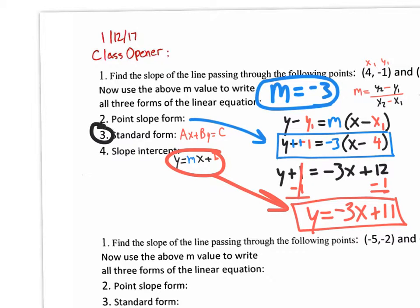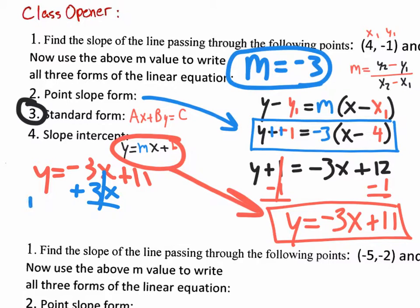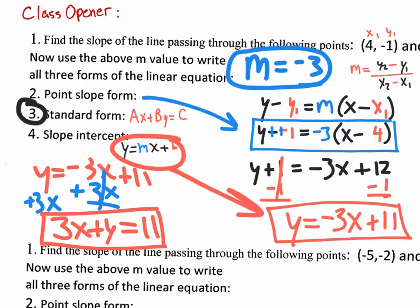We still need standard form, so either go back to point slope or use the slope intercept equation. Standard form has x's and y's on the left side of the equal sign. I need to move the negative three x over, so I add three x to both sides, giving me three x plus y equals eleven — that's standard form.